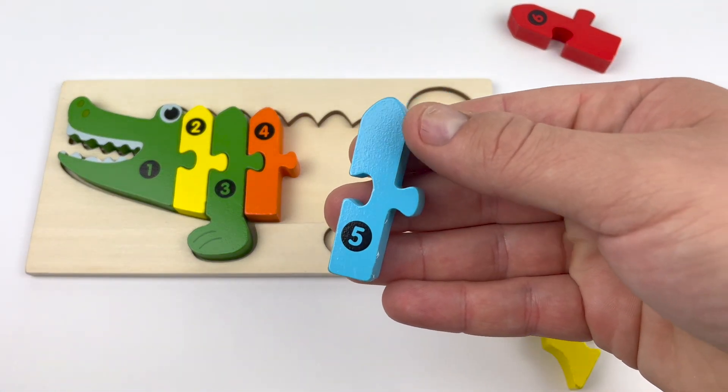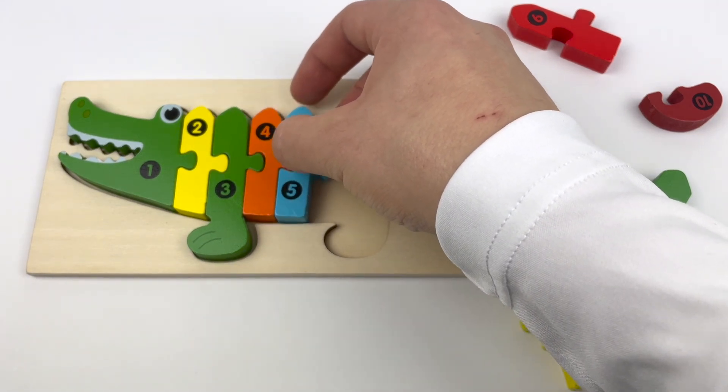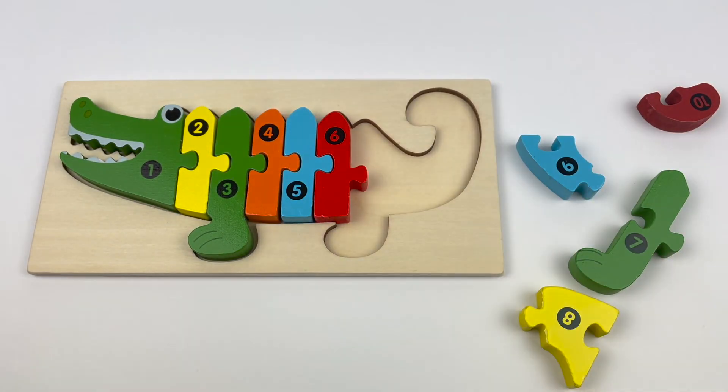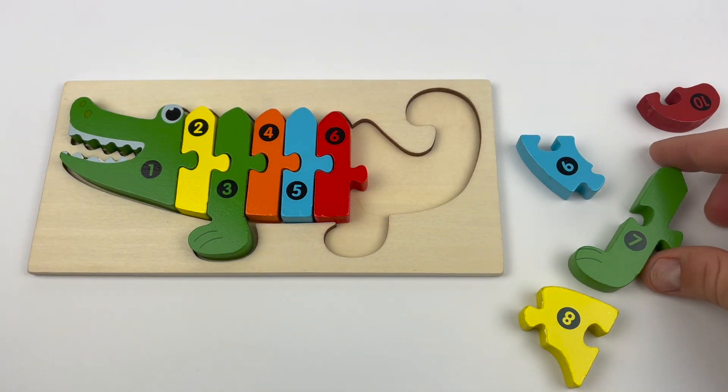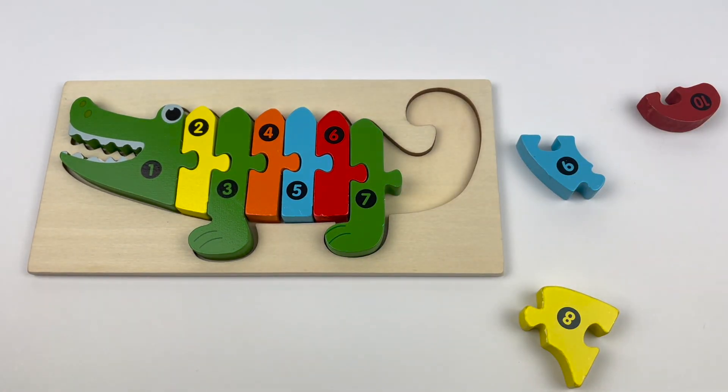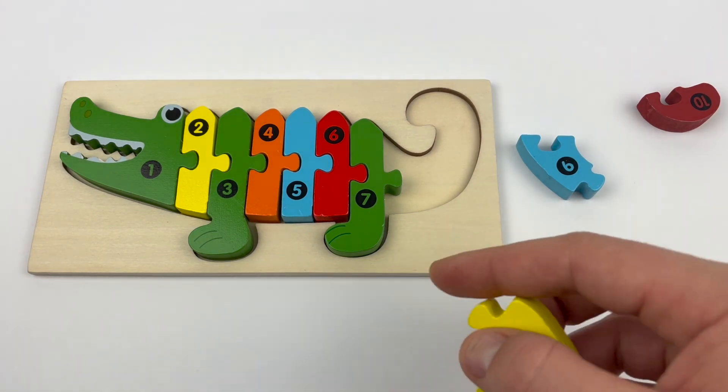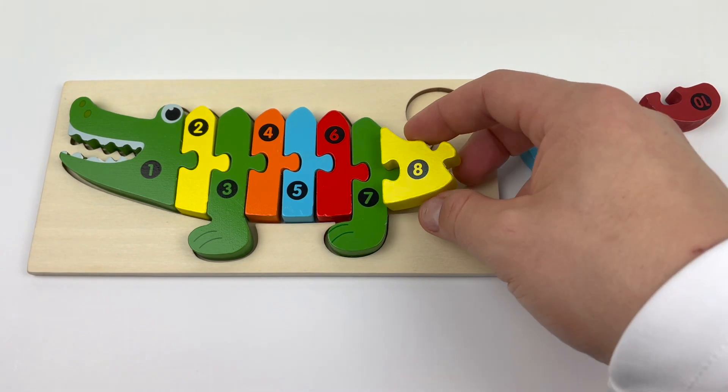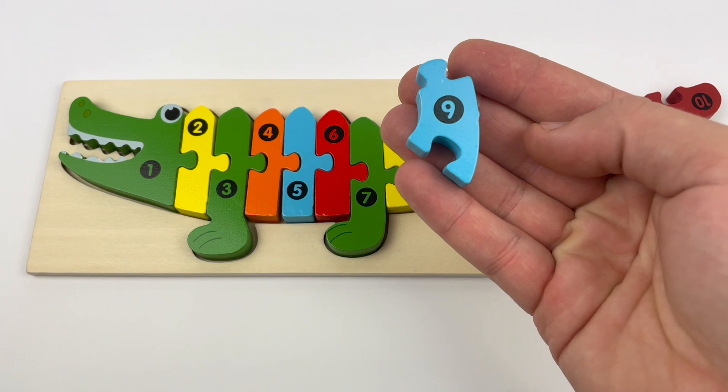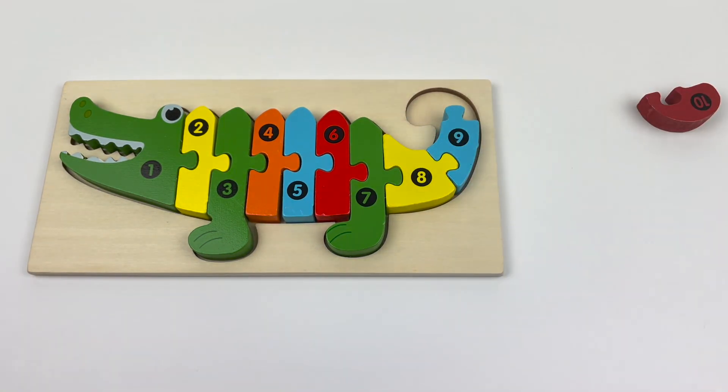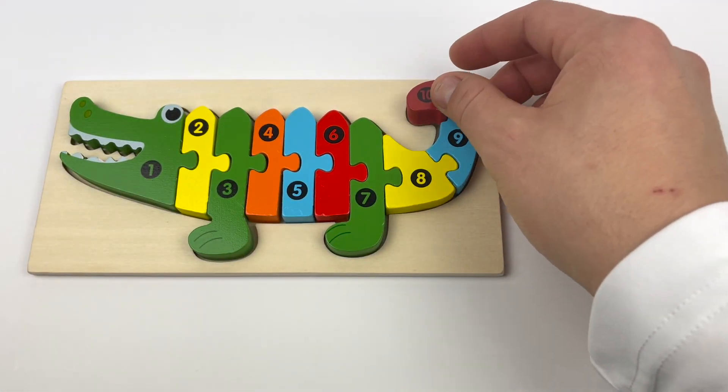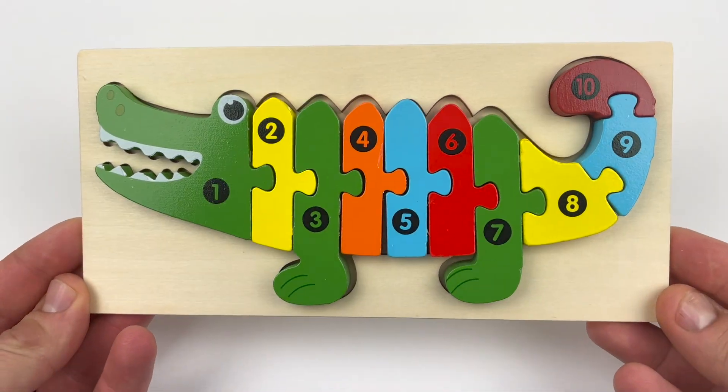Five. Blue. Six. Red. Seven. Green. Eight. Yellow. Nine. Blue. And our last piece, number ten. That's right. And here's our alligator.